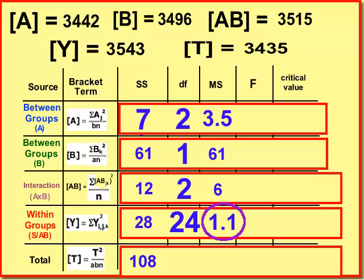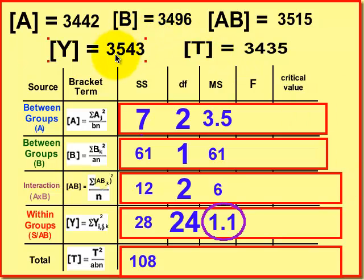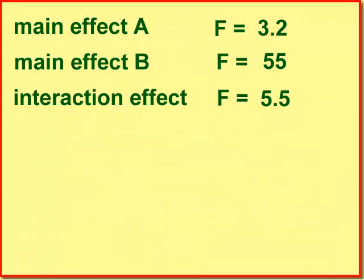But let's finish the total. The total is Y minus T. So it's going to be 3543 minus 3435. And we get 108. Amazing. And our degrees of freedom is A times B times N minus 1. So it's 3 times 2 times 5 is 30 minus 1 is 29. And we don't need anything else on this total. We're not really going to use it. But now we're going to go ahead and make our calculated Fs. So 3.5 divided by 1.1 is 3.2. 61 divided by 1.1 is 55. Again, I'm rounding seriously. And 6 divided by 1.1 is about 5.5. So now these are our calculated Fs.